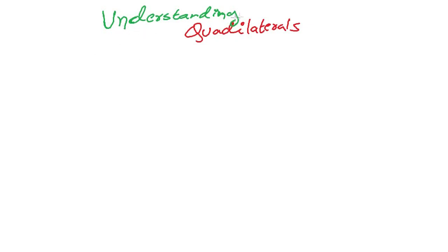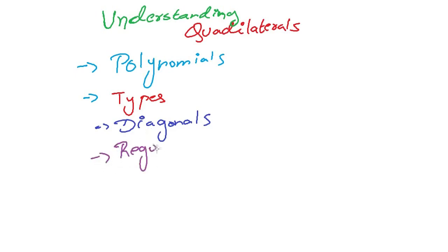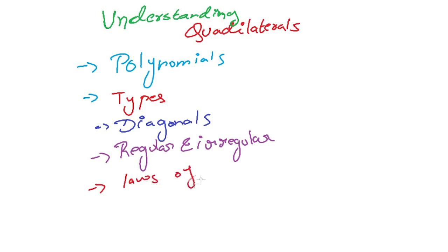In this unit of understanding correlaterals, we are going to see first about polynomials, then the types of polynomials, then we will learn about diagonals, then regular and irregular polygons, and finally a few laws of polygons. Now let us start. The first thing is polygons.